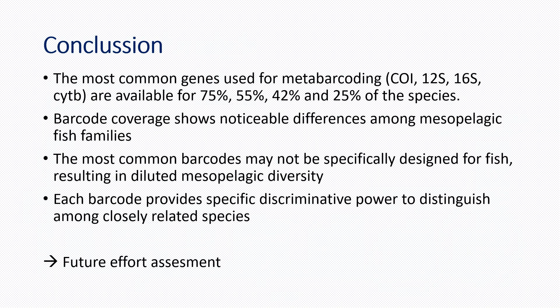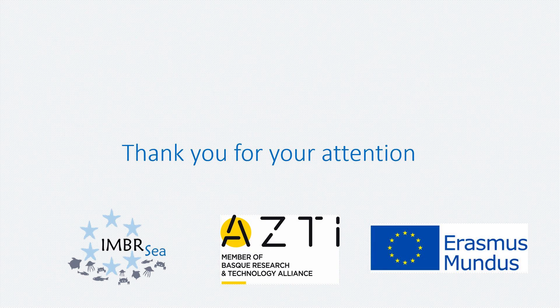The main conclusions of our gap analysis are: the most common genes for metabarcoding are available for 25%, 55%, 42%, and 25% of species. Barcode coverage shows noticeable differences among mesopelagic fish families. The most common barcodes may not be specifically designed for fish, resulting in diluted mesopelagic diversity detection. And each barcode provides a specific discriminative power to distinguish among closely related species. We hope this work will help in future effort assessment for these not well-understood animals. Thank you for your attention.